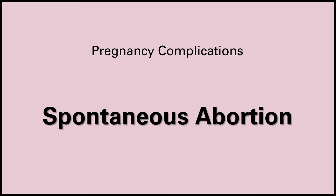A missed abortion is when fetal demise has occurred but all of the tissue is still retained in the uterus. Symptoms of pregnancy loss might be present, as well as brown discharge, but the cervix is still closed. Treatment is a D&C in the first trimester or dilation and evacuation in the second trimester, as well as misoprostol, which is a prostaglandin that causes uterine contractions. A septic abortion occurs when retained fetal tissue becomes infected. Symptoms include foul brownish discharge, fever and chills, spotting or heavy bleeding, uterine tenderness, cervical motion tenderness, but with a closed cervix, and some or all products of conception retained. Treatment is dilation and evacuation to remove the infected tissue, plus broad-spectrum antibiotics. In severe cases, a hysterectomy might be necessary. The last term is recurrent spontaneous abortions — three or more consecutive pregnancy losses.